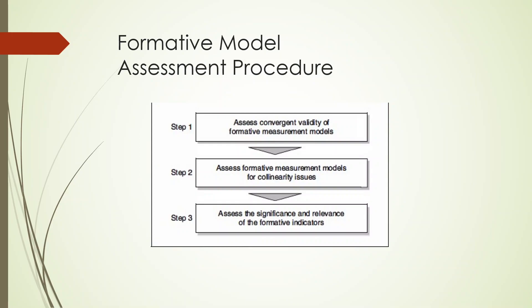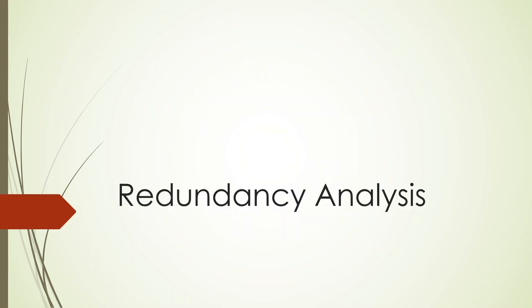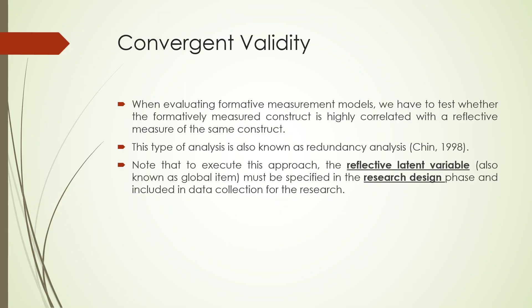The formative model assessment procedure has three steps: Step 1, check the convergent validity of the model and whether statements are to be retained or not. Step 2, check the collinearity issues. Step 3, check the significance and relevance of the formative indicators. The redundancy analysis approach was given by Chin in 1998.